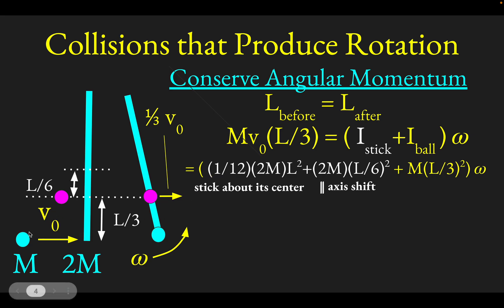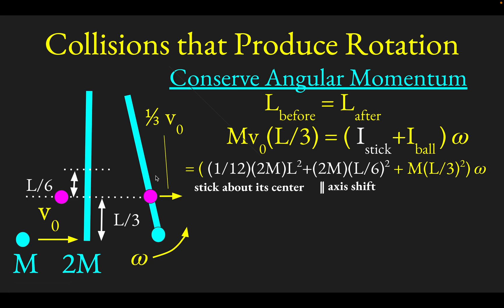Finally, we add the ball, treated as a point mass. Its moment of inertia is M·R², where R is the radius it orbits — which is L/3 from the center of mass. So the ball's contribution is M·(L/3)². Now we do a little algebra: pulling M·L² out of all the terms leaves a sum of fractions.